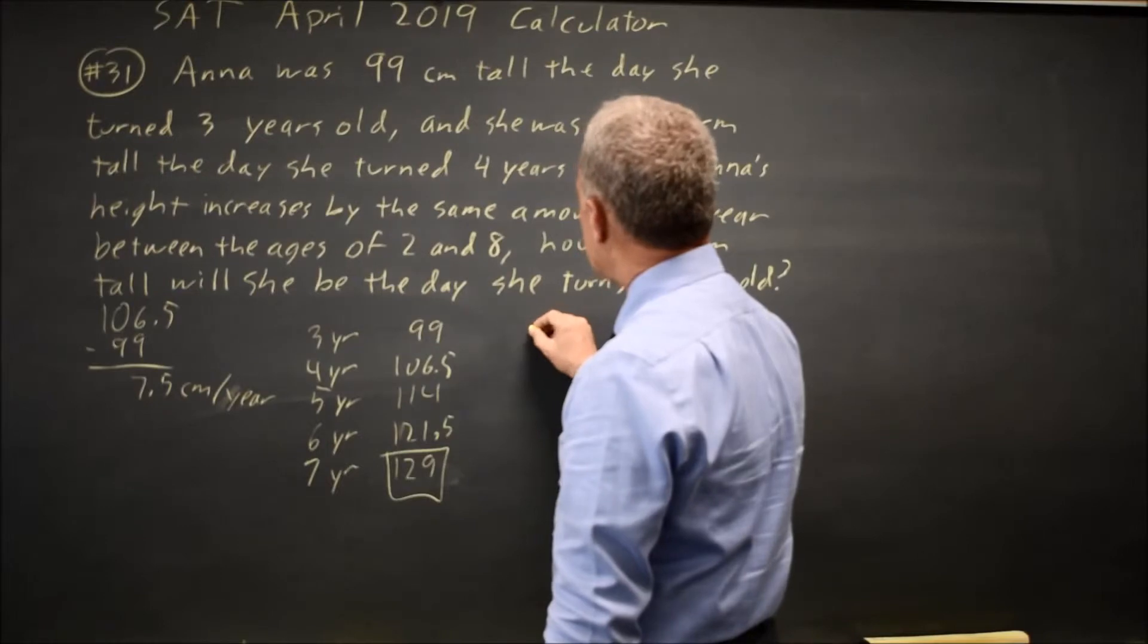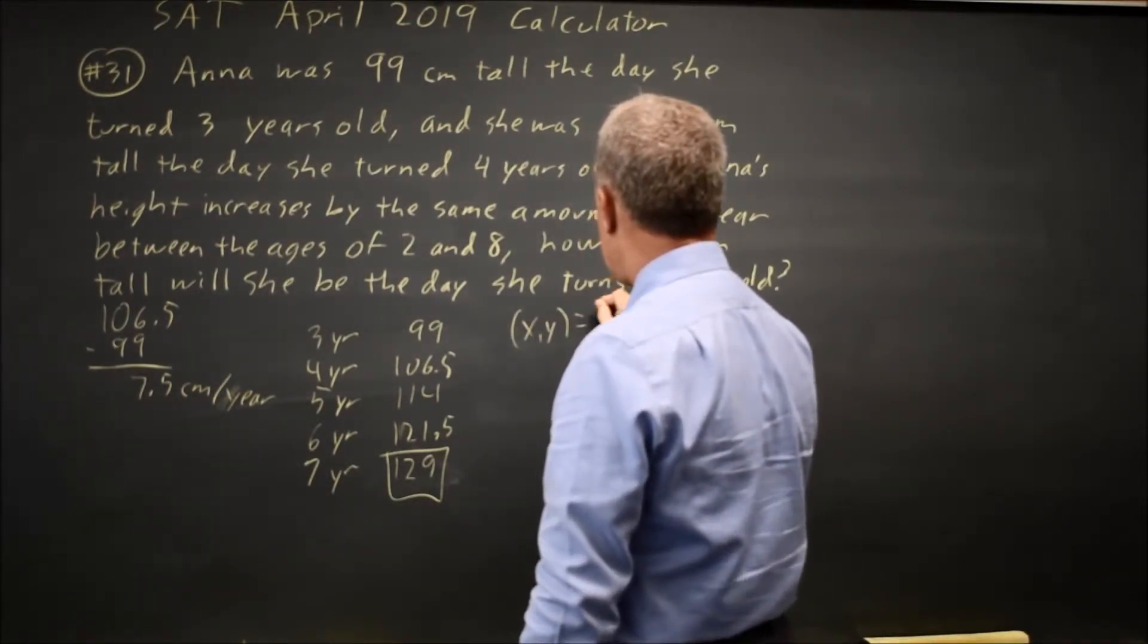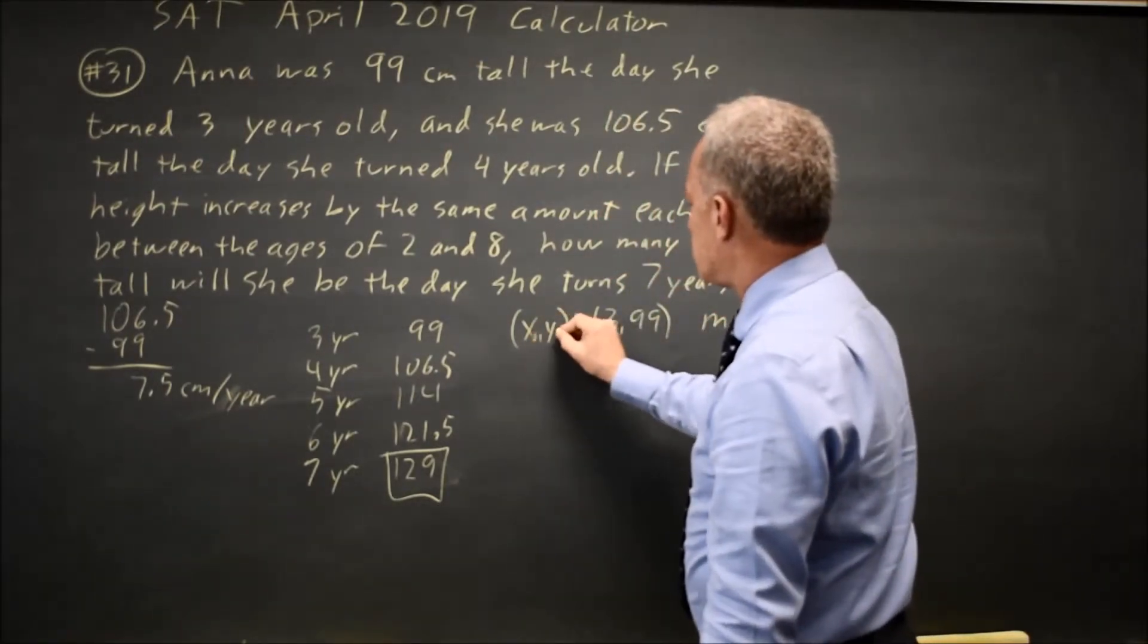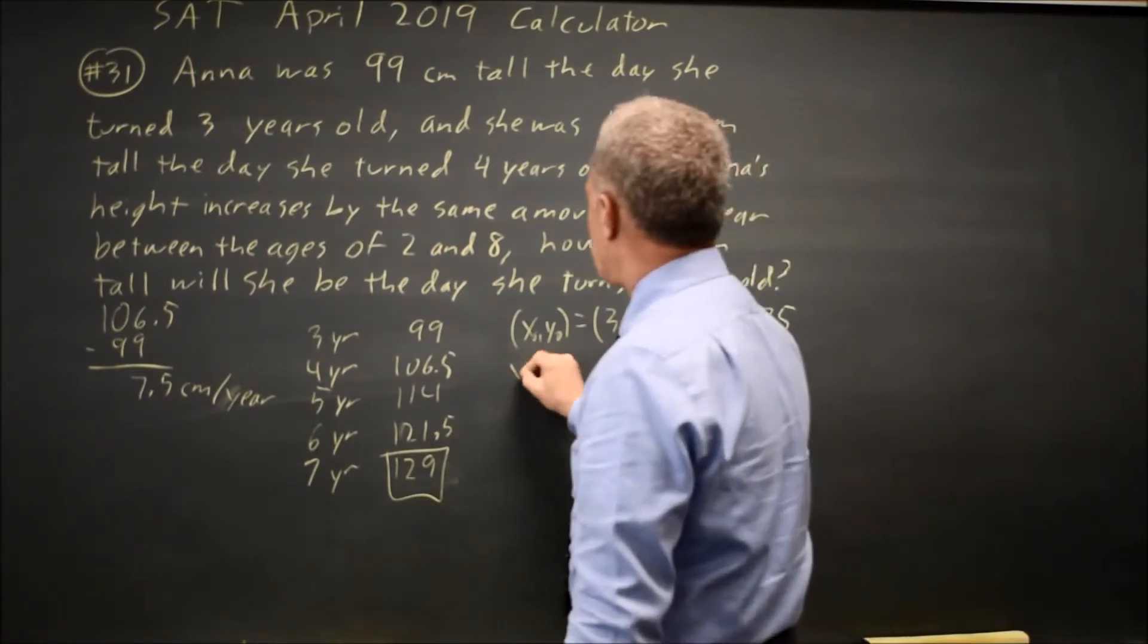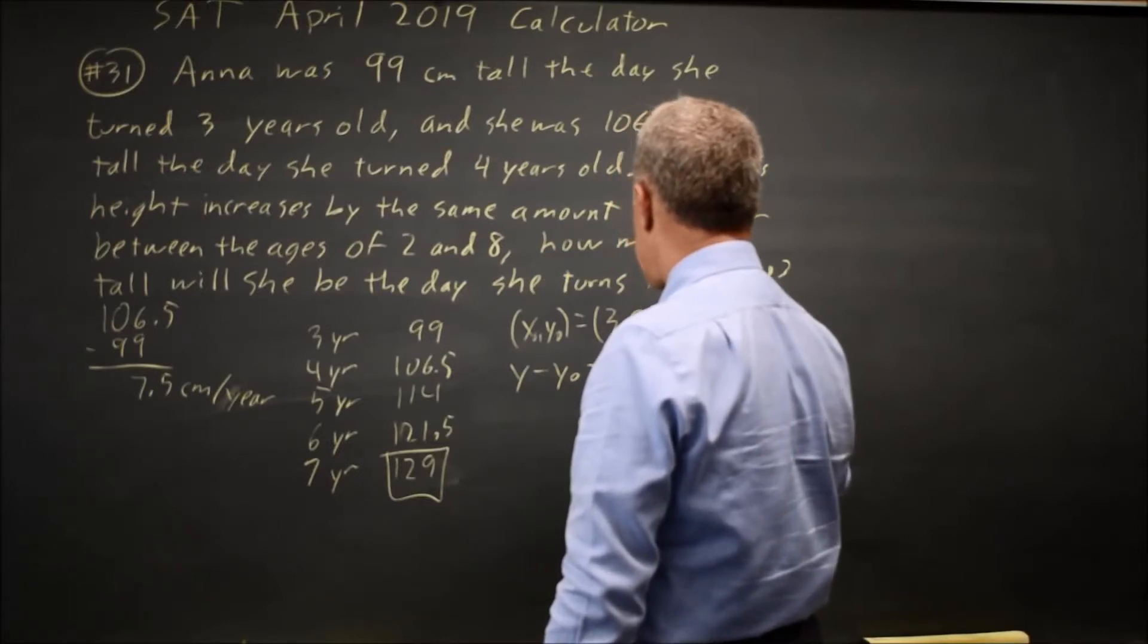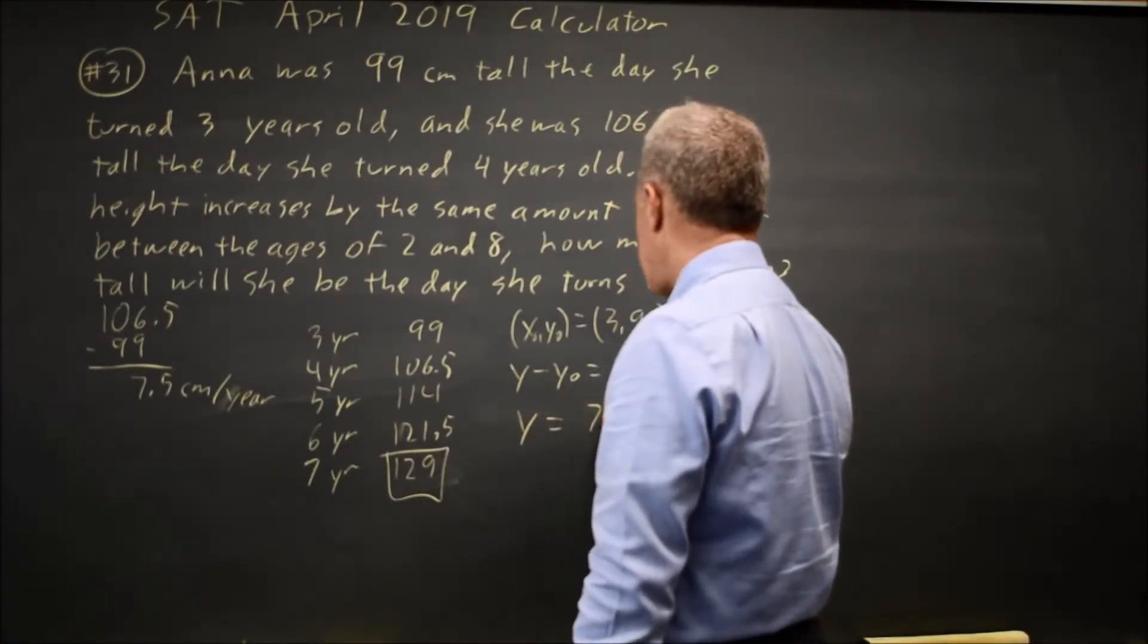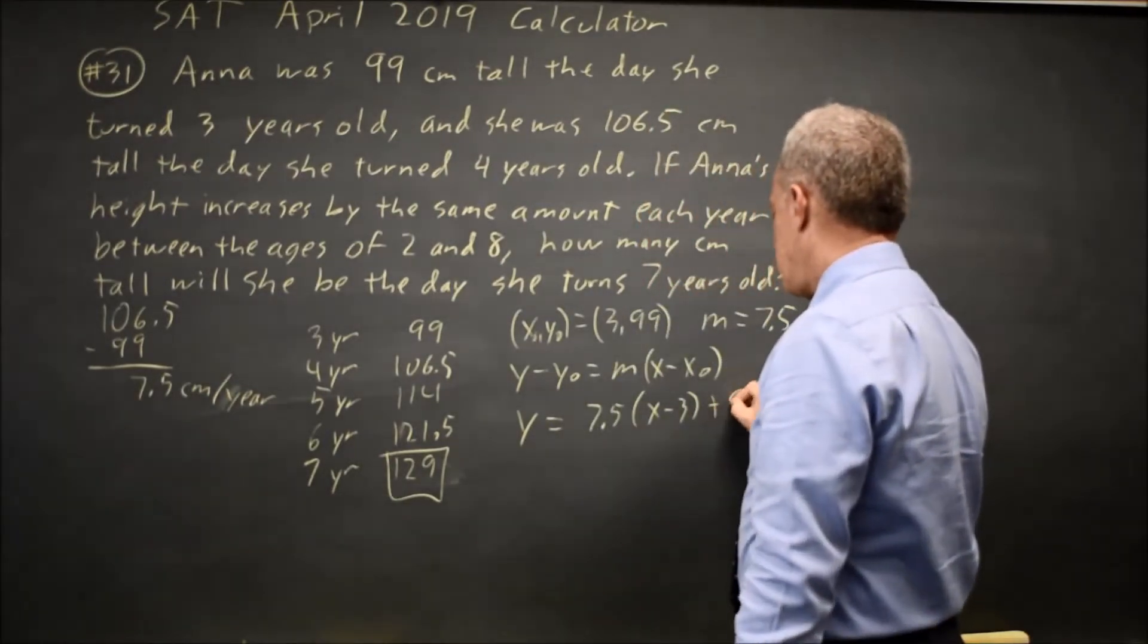given the point x, y equals 3, 99, and the slope, let's call it x0, y0, the slope is 7.5. We have y minus y0 equals our slope times x minus x0. So y equals our slope, 7.5, times x minus 3, plus 99.